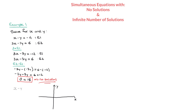Starting with the first equation, x minus y equals negative 4. To draw it, we make a table of values. If x equals 0, the first term disappears and we get negative y equals negative 4, so y equals 4. If y equals 0, then x equals negative 4. The y-intercept is at 4 and the x-intercept is at negative 4, so the first line looks like this.